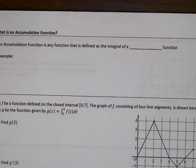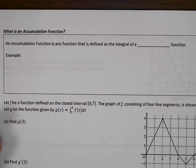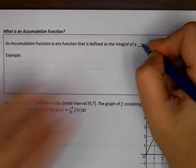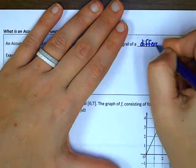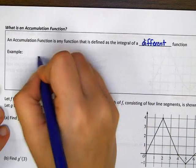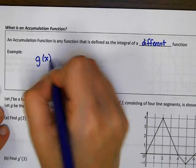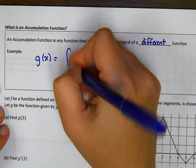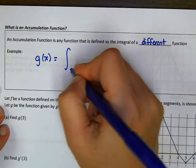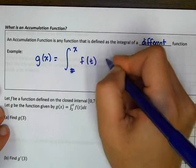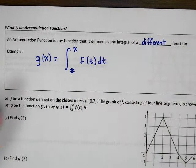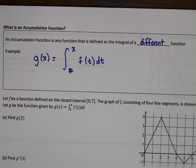An accumulation function is any function that is defined as the integral of a different function. So g of x could be defined as the integral from some number to 2x of a totally different function. We've done a little bit of work with these before, so let's look at an example of some problems we've already tried.